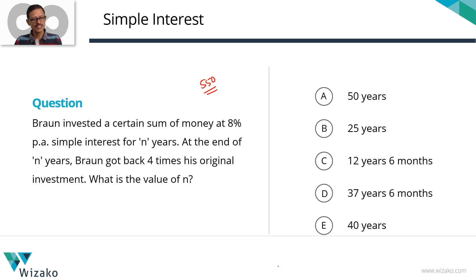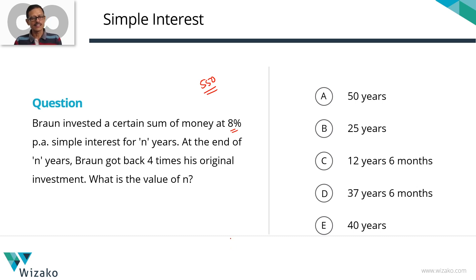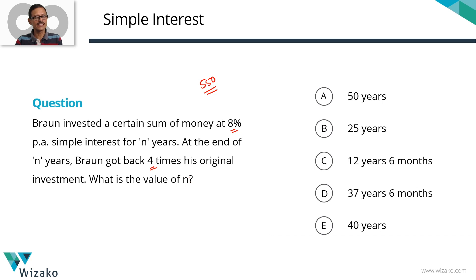Let's read this question. Braun invested a certain sum of money at eight percent per annum simple interest for n years. At the end of these n years, Braun got back four times his original investment. What is the value of n? This is the part where you need to interpret it carefully. Don't make any mistake there — many times people make a mistake here and therefore get an incorrect answer.